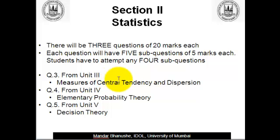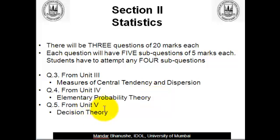Unit 3 is Measures of Central Tendency and Dispersion, Unit 4 is Elementary Probability Theory, and Unit 5 is Decision Theory.